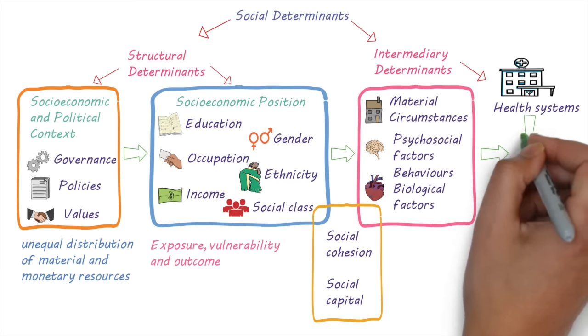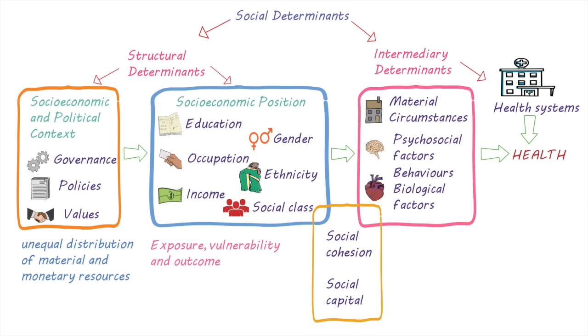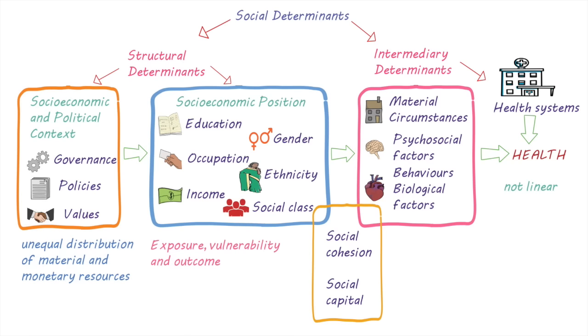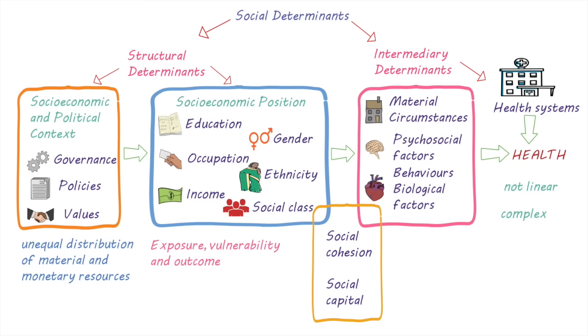Intermediary determinants influence health and health inequities. It's also important to know that the links between these different factors are not always linear, but are complex and can go in both directions.